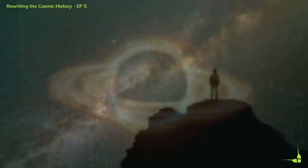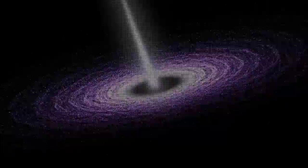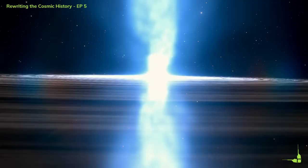How did this supermassive black hole form and grow so fast? This is a question that astronomers are still trying to answer. One possibility is that it started from a seed black hole that was formed by the collapse of a massive star or a dense cluster of matter in the early universe. However, this seed black hole would have to be very large and grow very fast to reach 10 million solar masses in such a short time.